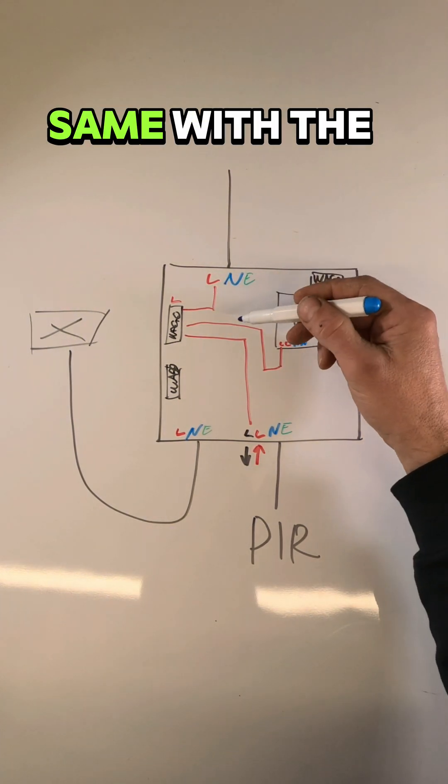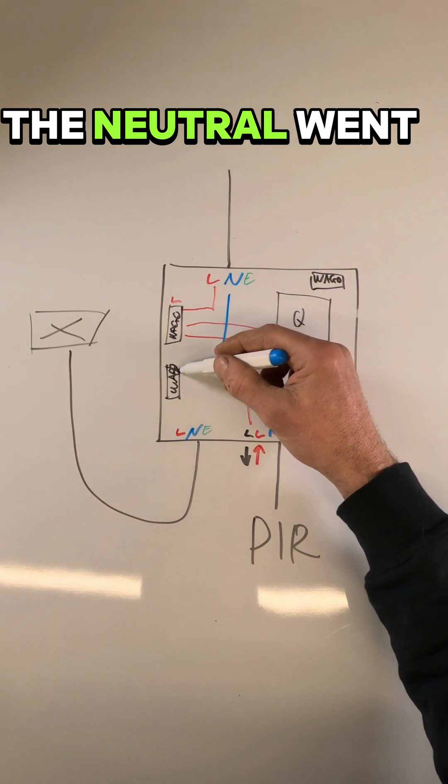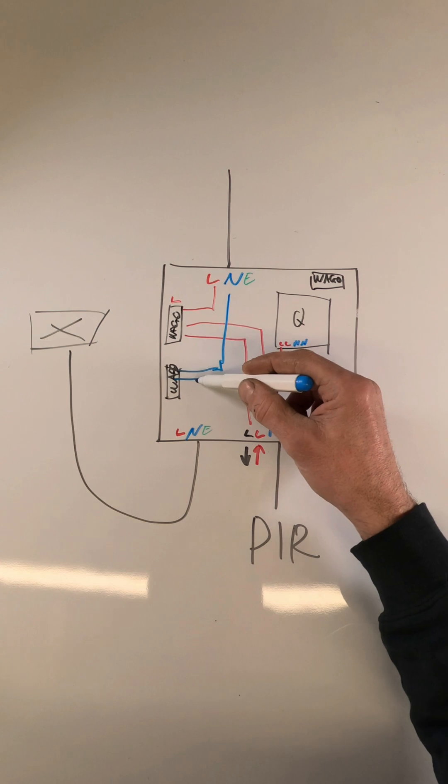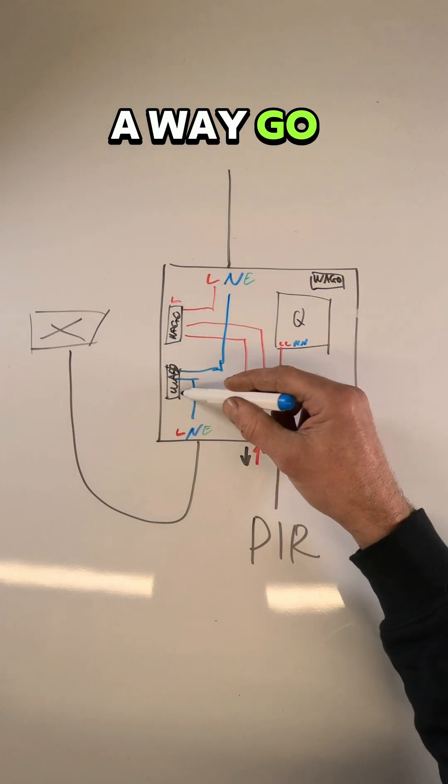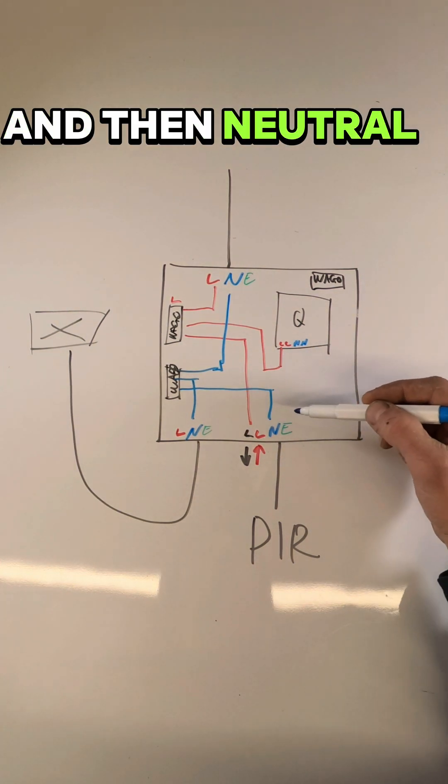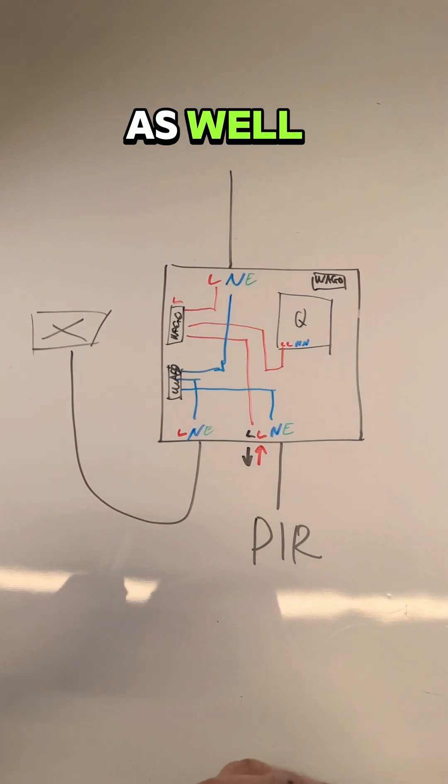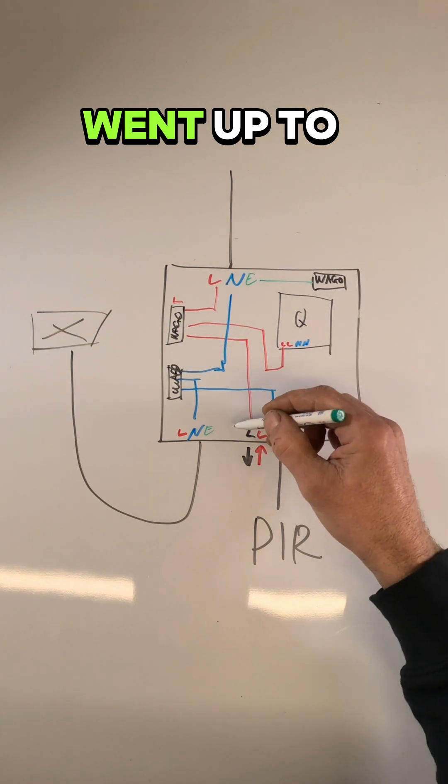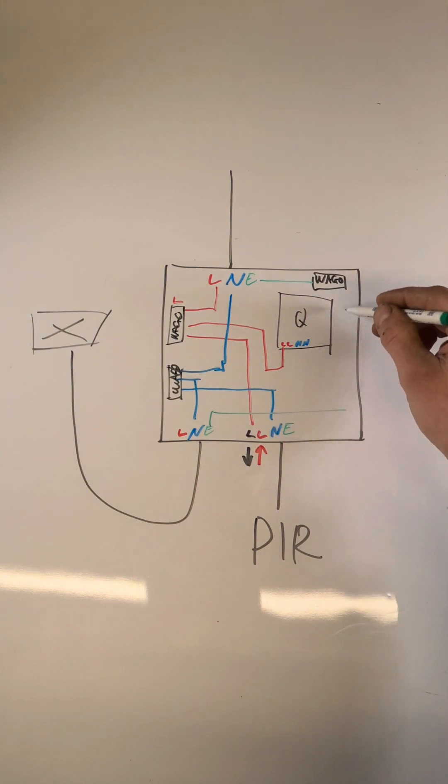We wanted to do the same with the neutral - the neutral went to a Wago, neutral went to a Wago, and then neutral to the PIR as well. And all the earths, they just went up to their own Wago.